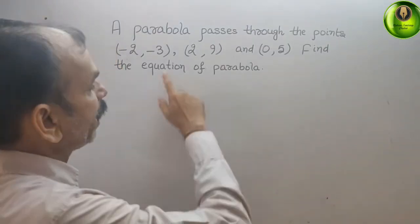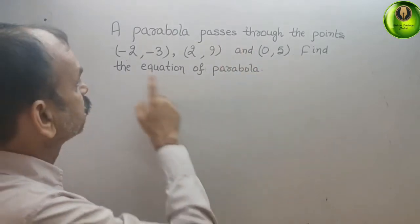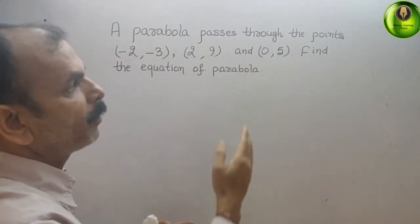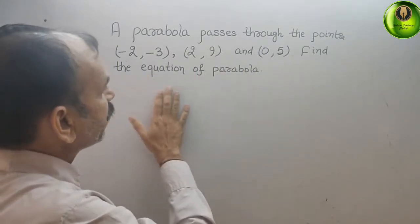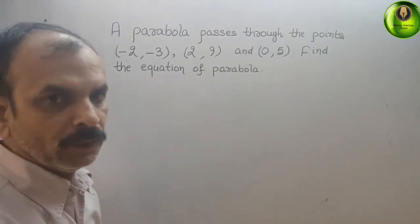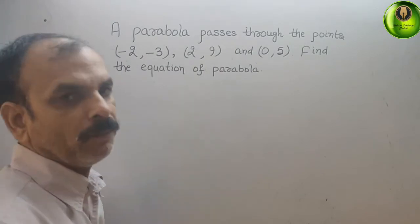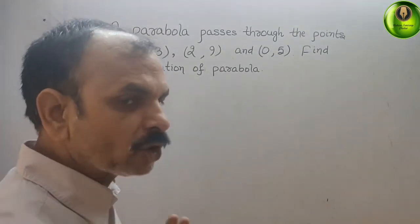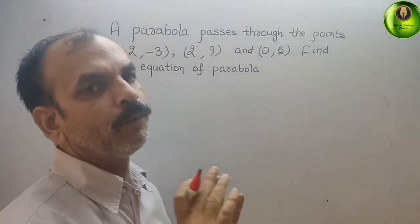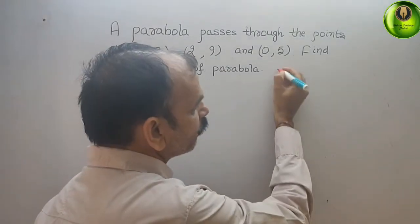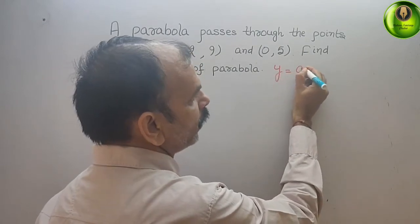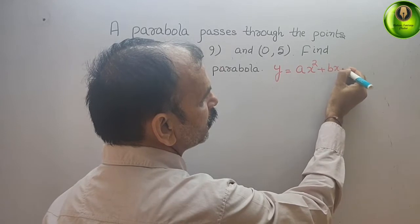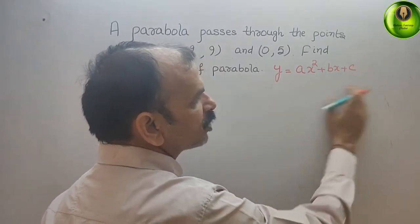Your question is: a parabola passes through the points (-2, -3), (2, 9), and (0, 5). Find the equation of the parabola. First, we should know the standard form of the equation of a parabola. It consists of x and y, both variables. Therefore, we can write it as y = ax² + bx + c. This is your standard form.